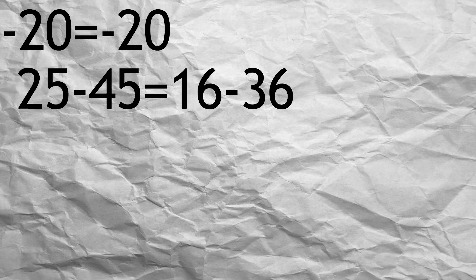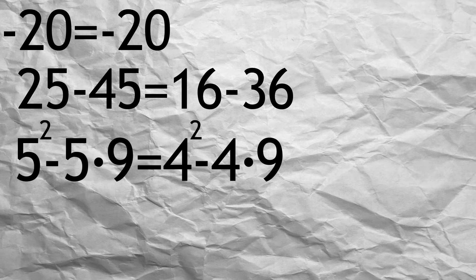Start from -20 equals -20. Write it as 25 - 45 equals 16 - 36. Rewrite as 5 squared - 5·9 + 81/4 equals 4 squared - 4·9 + 81/4. Add 81 division 4 on both sides.